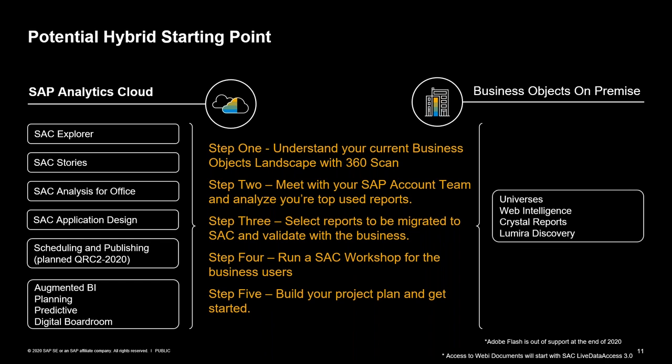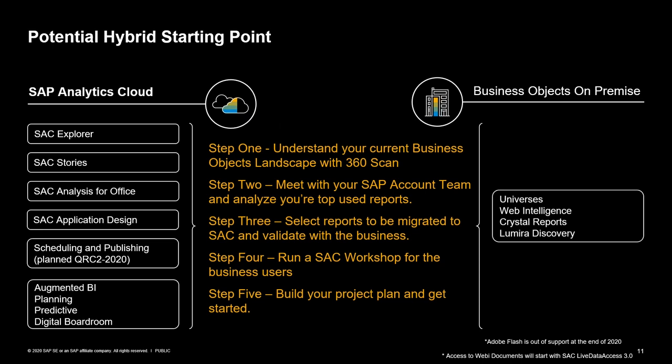What remains is a new Web Intelligence license that includes universes, Web Intelligence, Crystal Reports, and Lumira Discovery. Here is a five-step process to get started: Step one — understand your current Business Objects landscape using 360 Scan to identify your top reports, who's using them, and which are best candidates to move to SAC. Step two — meet with your SAP and 360 account team to analyze top-use reports and pick candidates. Step three — validate with the business that they'll see benefit from augmented and smart features. Step four — run an SAC workshop for business users. Step five — build your project plan and get started.